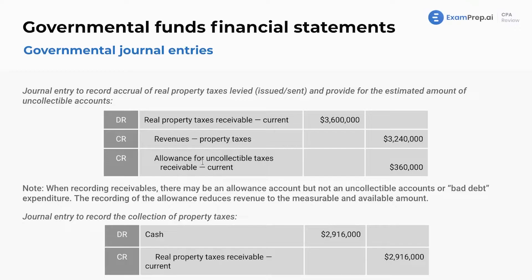Remember measurable and available: you recognize revenue when it's measurable, when you can estimate the dollar amount. In this case, we were able to estimate the dollar amount as $3.6 million, and available just means that it's during the year or two months after. So this $3.6 million is likely for the year as well as next January and February. Note: when recording receivables, there may be an allowance account, but not an uncollectible accounts or bad debt expenditure. The recording of the allowance reduces revenue to the measurable and available amount — less steps than in corporate accounting.